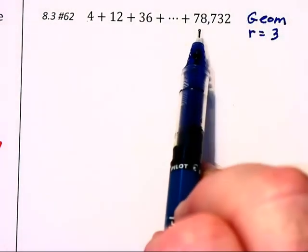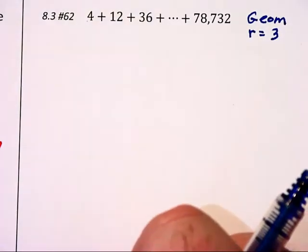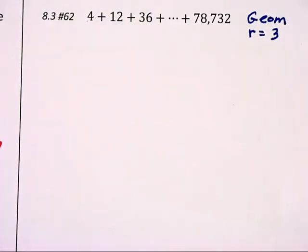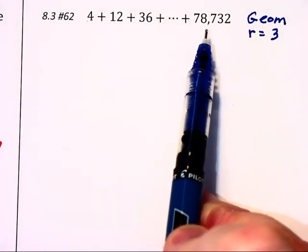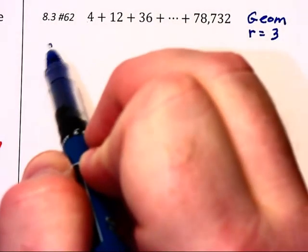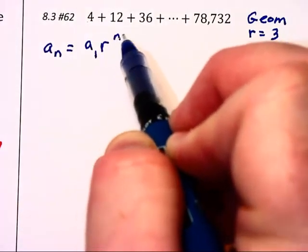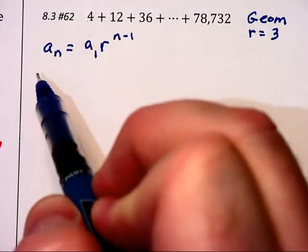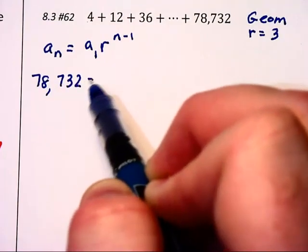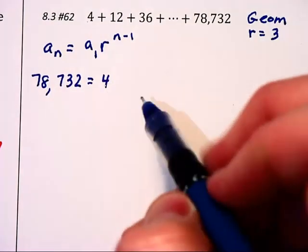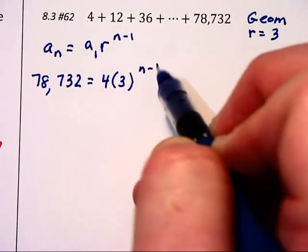Now, 78,000 is rather large, and I just don't want to write all these things out and count by hand how many terms we have. So, I'm going to first find out how many terms we've gone out there. And I'm going to use my A sub N formula is A1 times R to the N minus 1st power. In other words, 78,732 is equal to 4 times our ratio of 3 to the N minus 1st power.